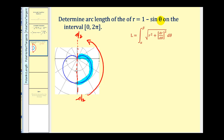Notice when θ = −π/2, we'd have 1 − (−1), so r is equal to two — this corresponds to this point right here. And then when θ = π/2, we have 1 − 1, which is zero, so we're at the pole right here.